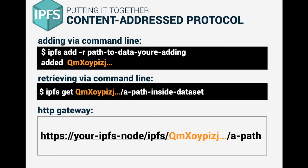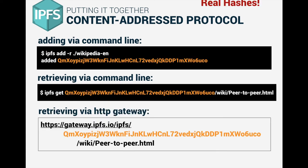IPFS nodes are also backwards compatible with the HTTP web — you can use these hashes to ask any IPFS node to retrieve content for you. This allows tools like web browsers to use HTTP to retrieve content that's actually stored on the peer-to-peer web. For a concrete example: this is a real hash for a snapshot of the English version of Wikipedia. Having added that entire corpus — which is about two terabytes — onto an IPFS node, you have the hash for that content and can retrieve any subset such as an individual Wikipedia page using that hash plus the path within that corpus. You can do this by directly interacting with an IPFS node using IPFS APIs, or you can retrieve it over HTTP using those same paths and identifiers.